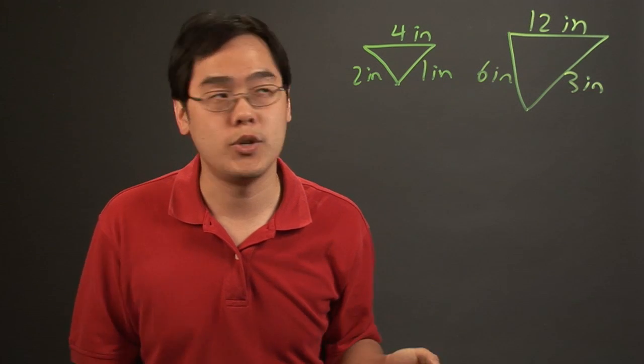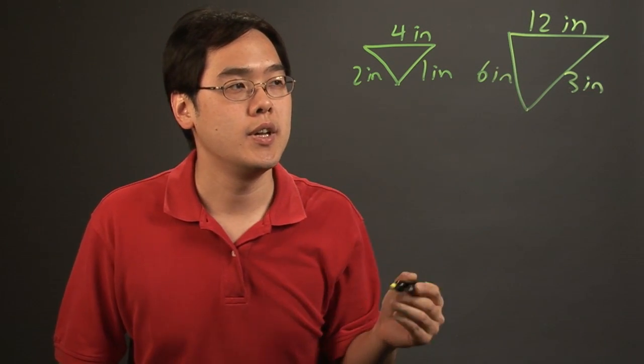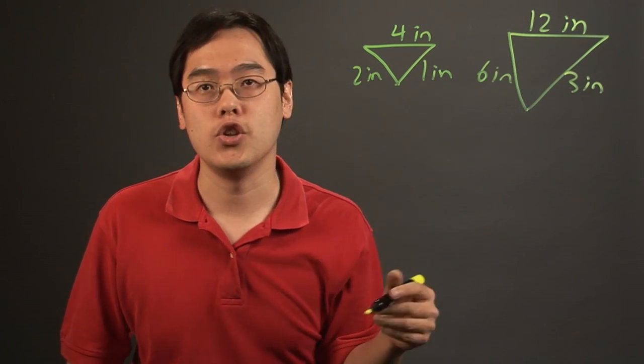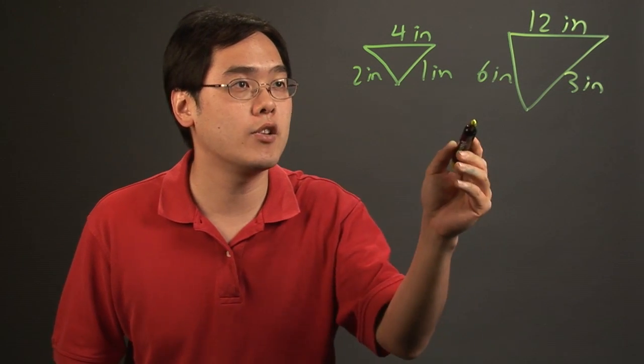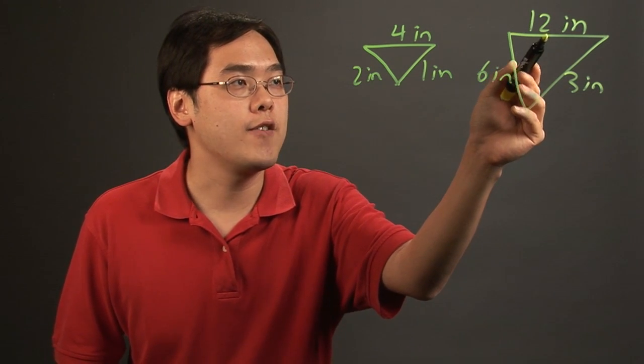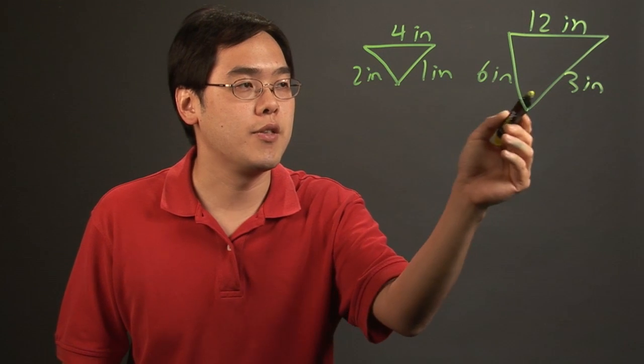And if you can find a relationship between the dimensions, you can talk about scale factor. In this particular case, you can say that every dimension here is going to be three times as much as the smaller triangle.